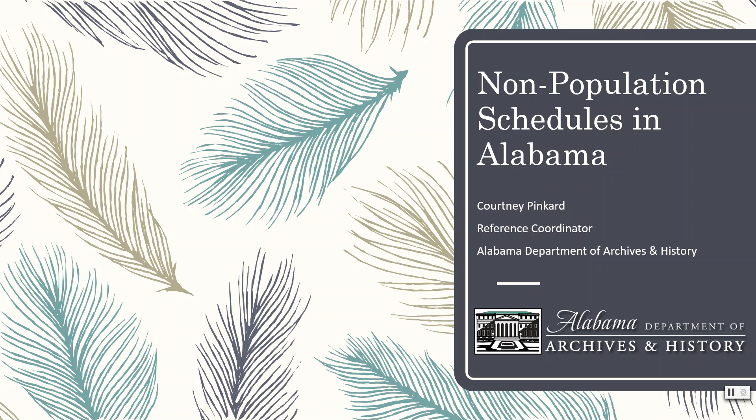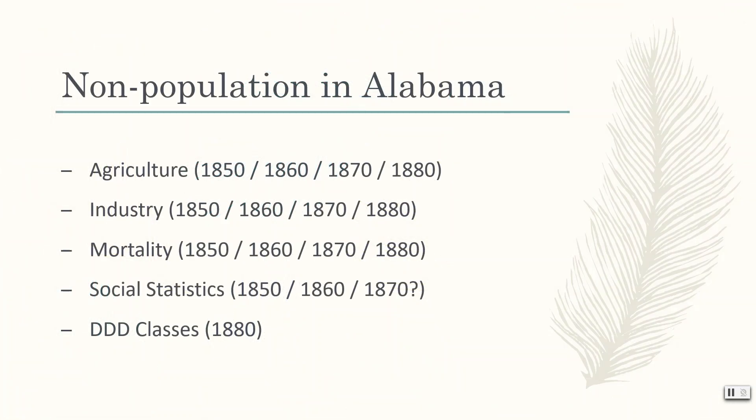These commonly overlooked resources will add new dimensions to your ancestors' stories, from showing how many acres of land they owned and which crops they grew, to what industries operated in their communities, what educational opportunities were available in their area, and even what taxes they may have paid. This slide lists the non-population schedules available for Alabama, along with the years they were taken. Due to time constraints, the last schedule on this list, the Triple D classes, will not be covered. We will, however, take a look at each of the other schedules individually, with examples, to show how they can be used.